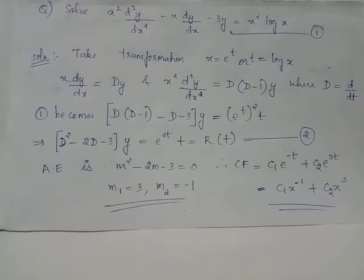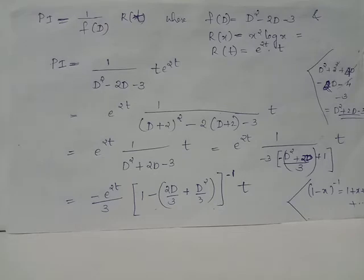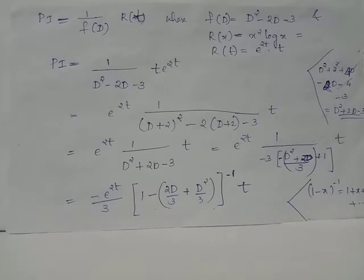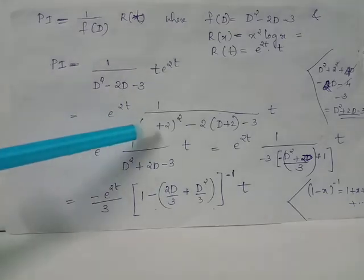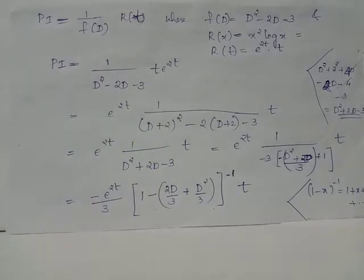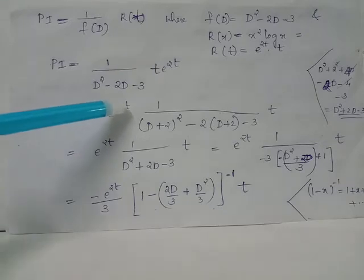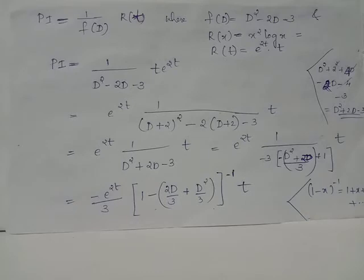Now we will find the particular integral for equation 2. We have PI equals 1 over f(D) acting on the RHS, which is e raised to 2t multiplied by t, where f(D) equals D squared minus 2D minus 3. Since the input function is an exponential function multiplied by another function of t, we can take the exponential outside the operator, but 1 over f(D) gets transformed to 1 over f(D plus 2) — that is, wherever D appears in f(D) it is replaced by D plus 2, where 2 is the coefficient of t in the exponential.